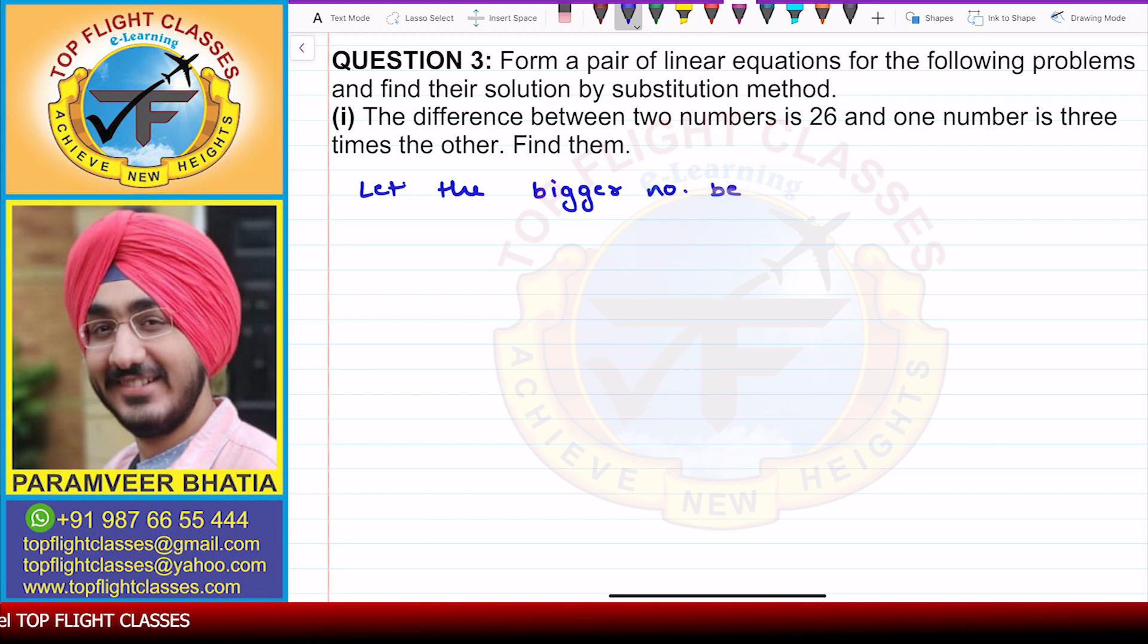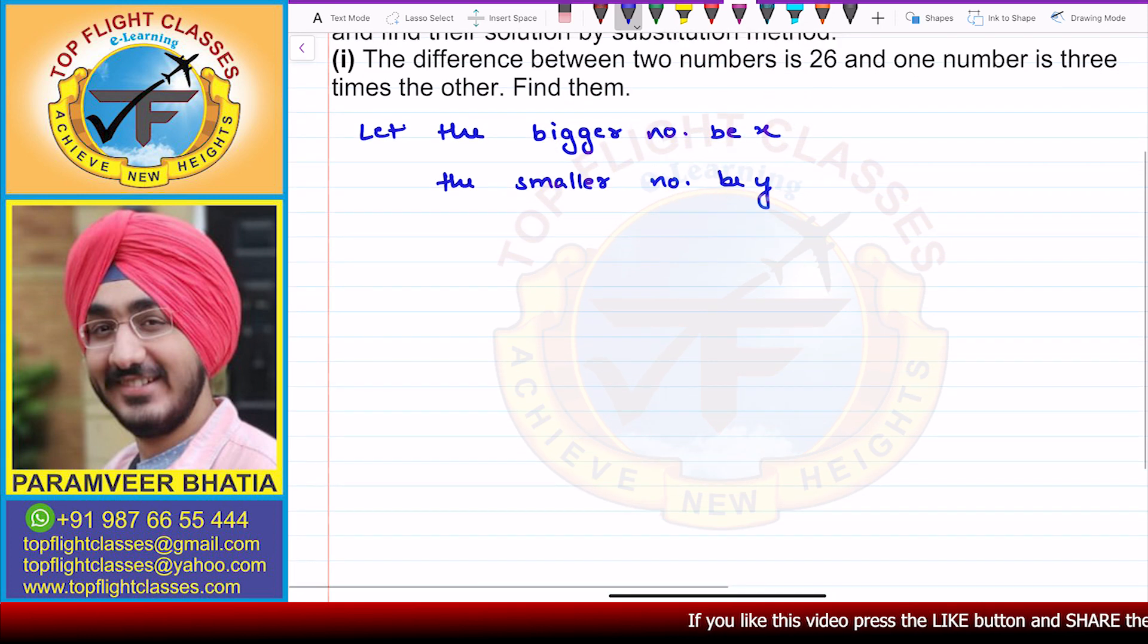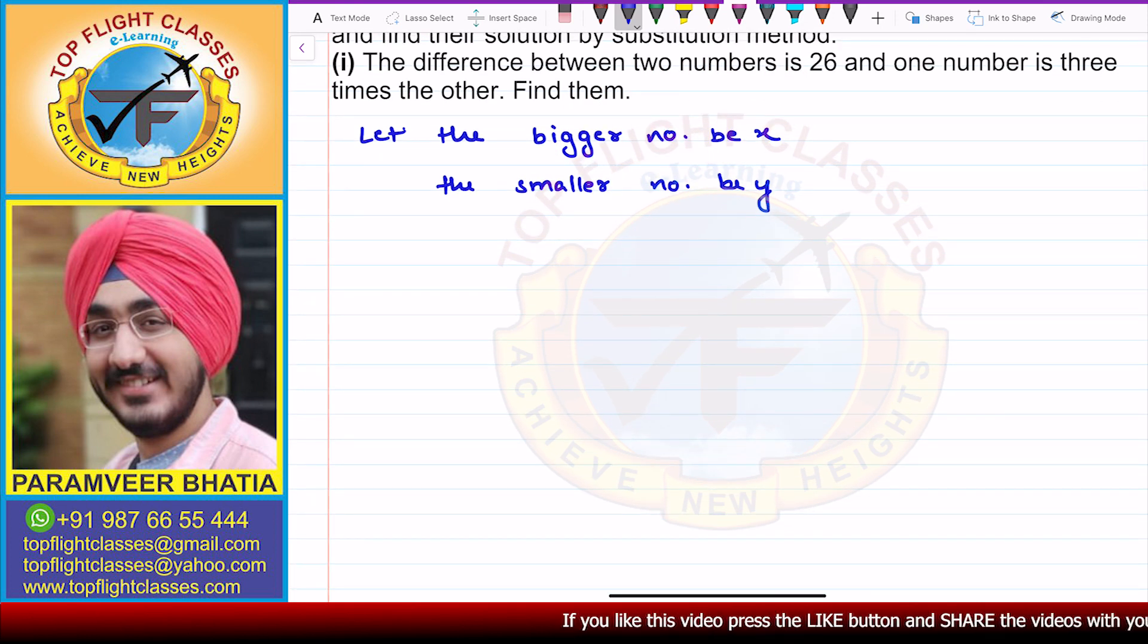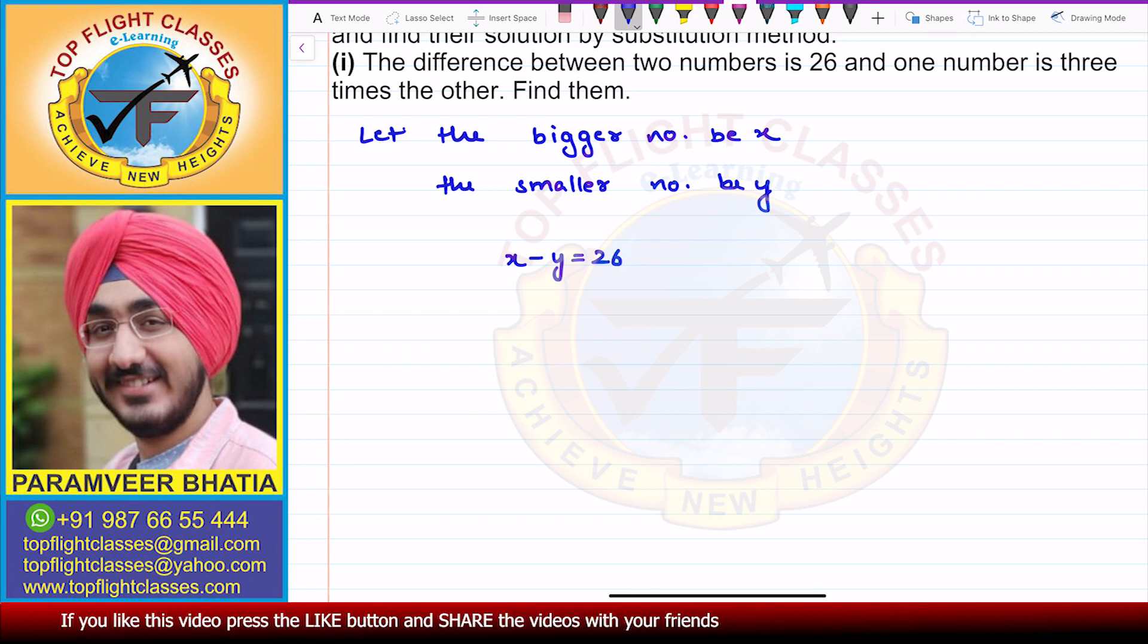Now you can take opposite as well, bigger number y, smaller number x. Now we have two numbers x and y whose difference is 26. So difference 26, that means x minus y is equal to 26. Bigger minus smaller will give me 26 as the difference.